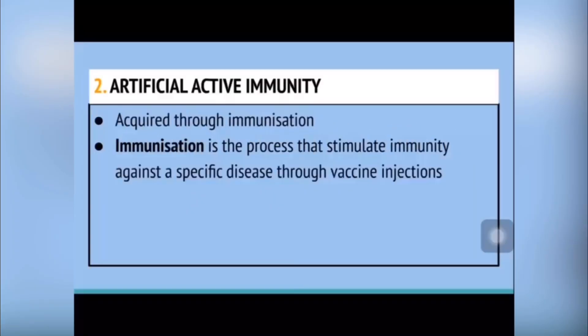Artificial active immunity is acquired through immunization. Immunization is the process that stimulates immunity against a specific disease through vaccine injection.